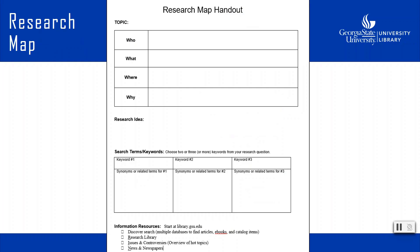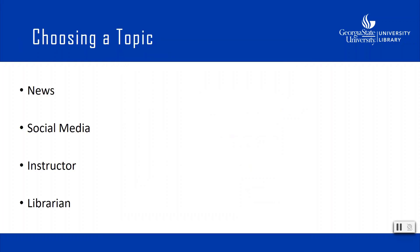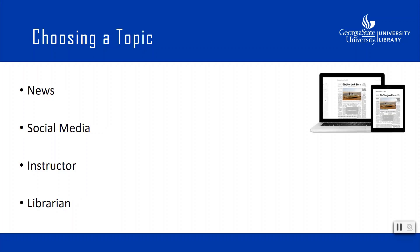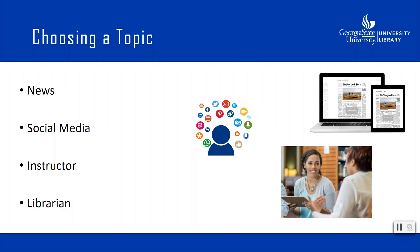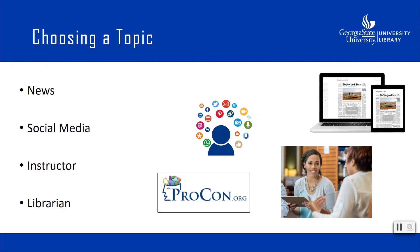We will begin by identifying your starting topic. For your assignment, you can choose any topic that interests you. But what can you do if you don't have a topic in mind? You can start by going to the websites of the New York Times, Wall Street Journal, the BBC, or other news sources. You can see what people are talking about on social media platforms like Facebook and Twitter. You could talk to your instructor about possible topic ideas, or ask a librarian who could point you to useful tools like Procon.org.